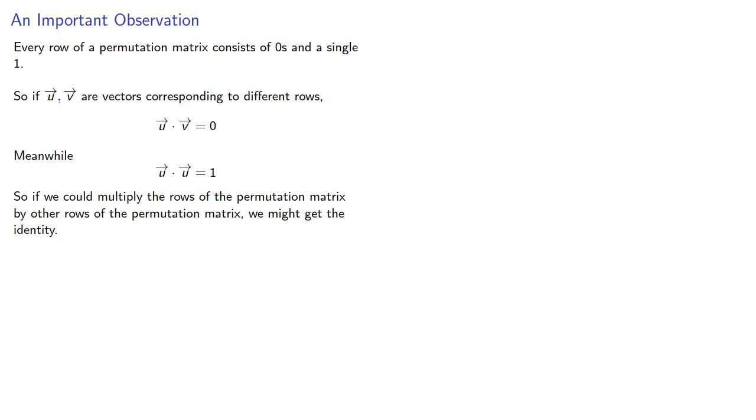But remember, the transpose of a matrix turns row vectors into column vectors. And this suggests that if P is a permutation matrix, its inverse is its transpose.